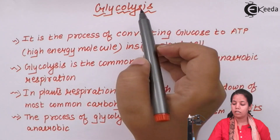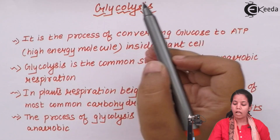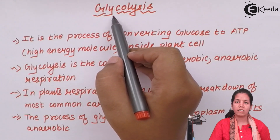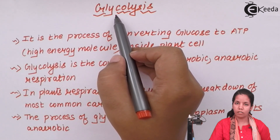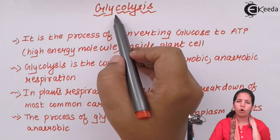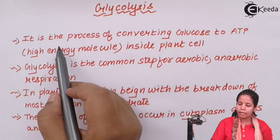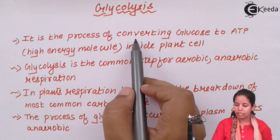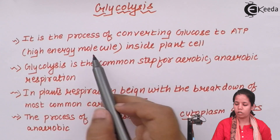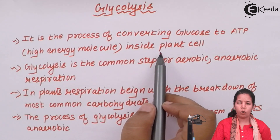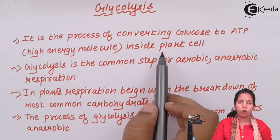Glycolysis means the breakdown of glucose — C6H12O6 — the food source of the plant which is formed during photosynthesis. It is a process of converting glucose into ATP, the high-energy molecule, inside the plant cell. Glycolysis is nothing but the conversion of glucose into ATP, the energy currency of the cell.